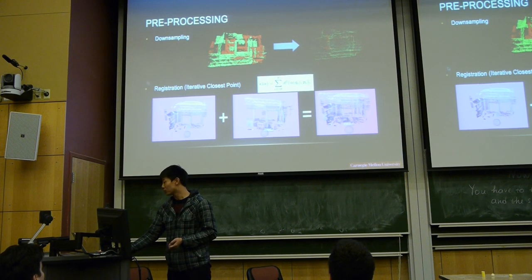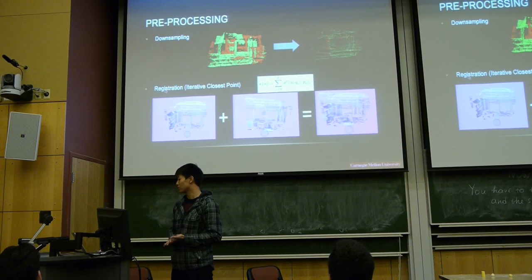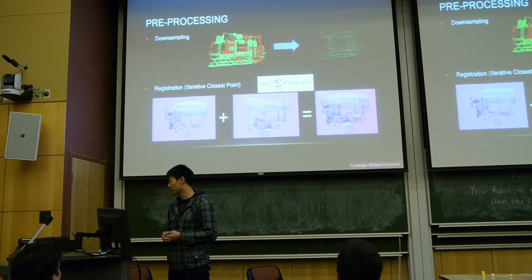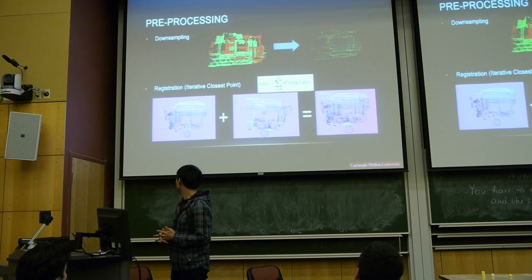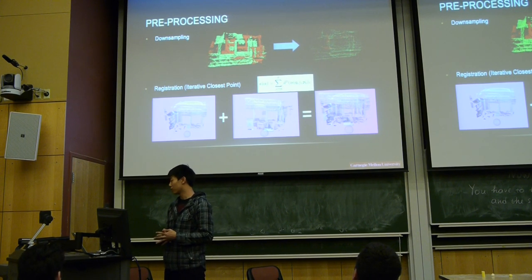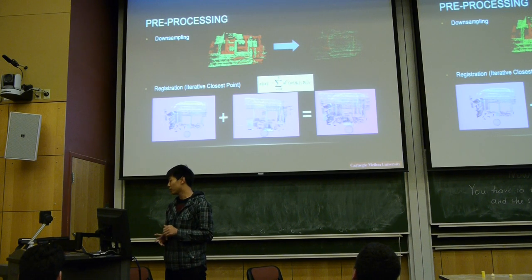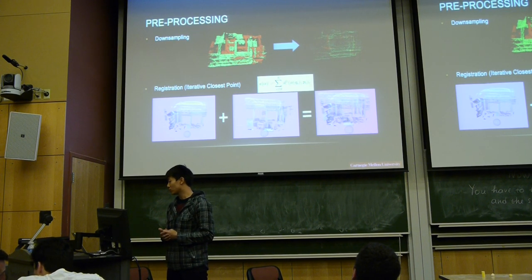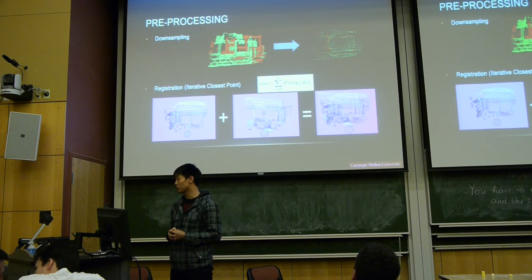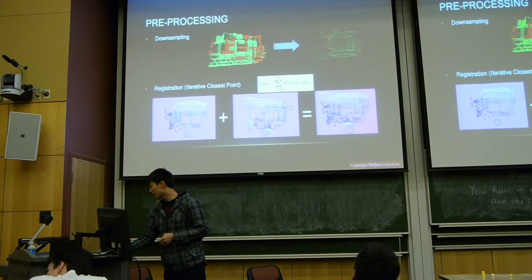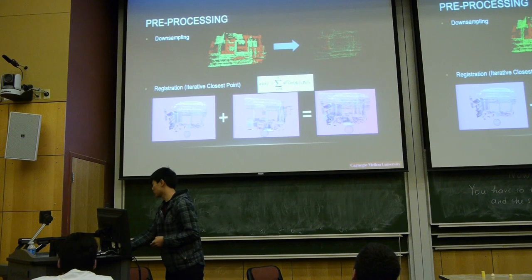And then the registration process employs the iterative closest point. It actually takes as input two single images and then iteratively processes these two single images to find the minimum distance between two point clouds. And this is the registration results.